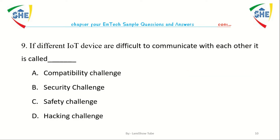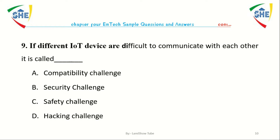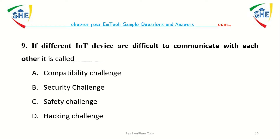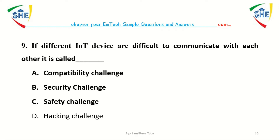Question number nine: If different IoT devices are difficult to communicate with each other, it is called dash. A. Compatibility challenge, B. Security challenge, C. Safety challenge, D. Hacking challenge.